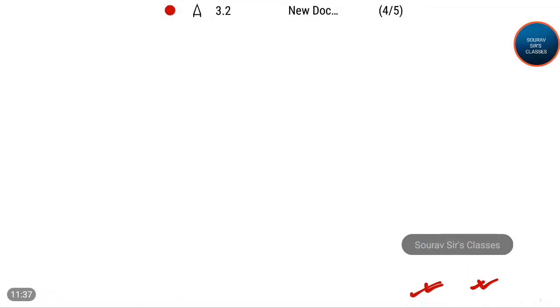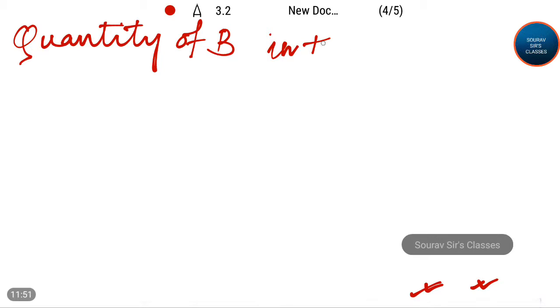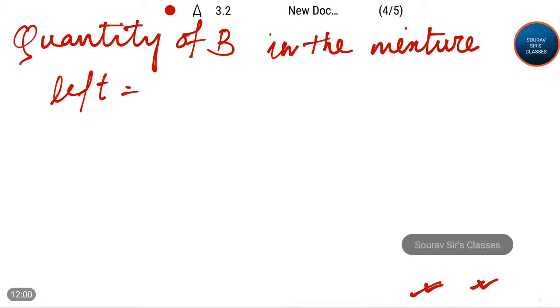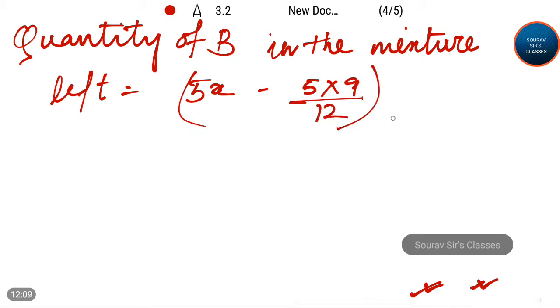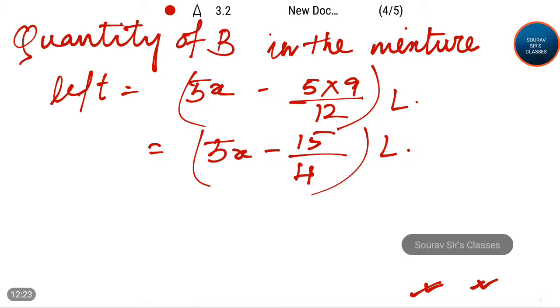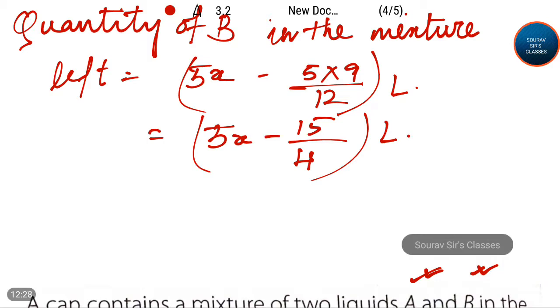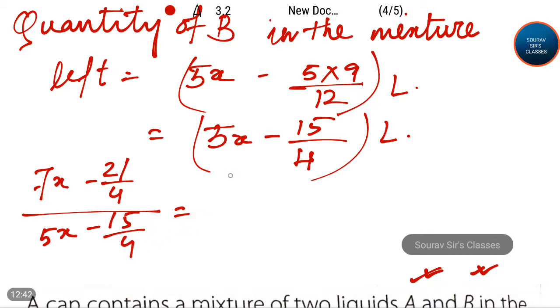The quantity of B in the mixture left is equal to 5x minus 5x into 9 by 12, which is equal to 5x minus 15 by 4 liters. Now this ratio, that is (7x minus 21/4) divided by (5x minus 15/4), is equal to 7 by 9.